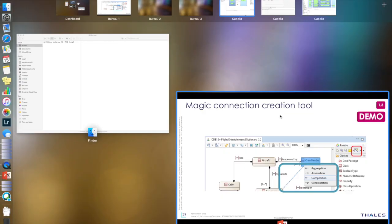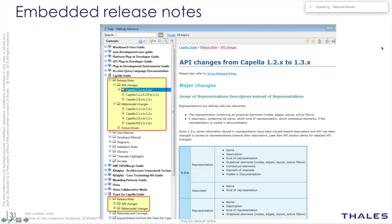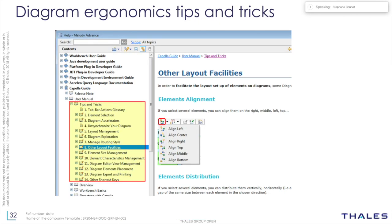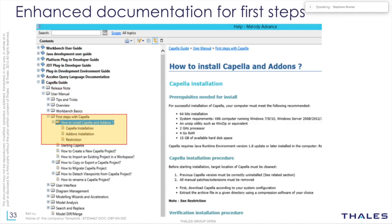There have been improvements in documentation: we've added release notes and in particular all API changes from one version to another, which is particularly useful when maintaining Capella enrichments. We've also improved documentation about diagram ergonomics — aligning elements and other useful tips — now embedded in Capella help, plus embedded documentation about how to install Capella add-ons.